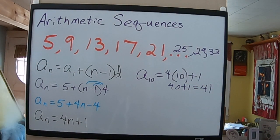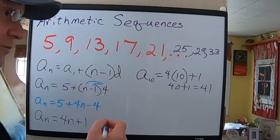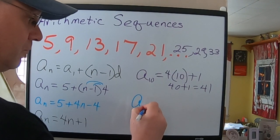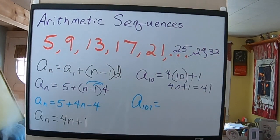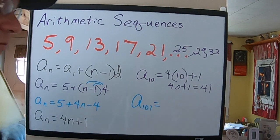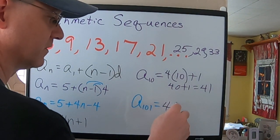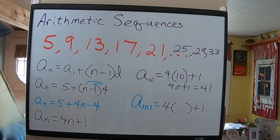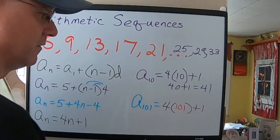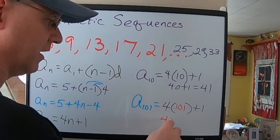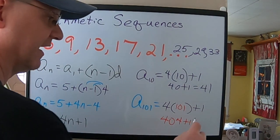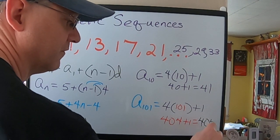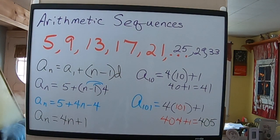Now, if I wanted to find, say, the 101st term, I'm not going to want, I could do the 10th term this way. That wouldn't take me a whole lot longer. But, I'm not going to want to do 101 of those. So, 4 times N plus 1, if I plug in 101, 4 times 101 is 404 plus 1, and I get my final answer of 405. And that would be the 101st term.